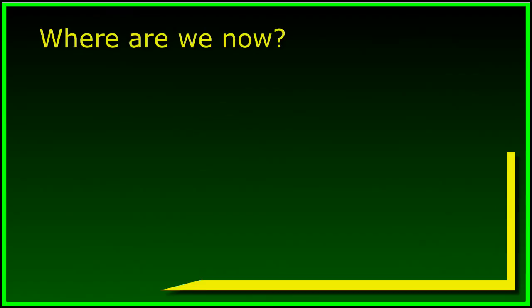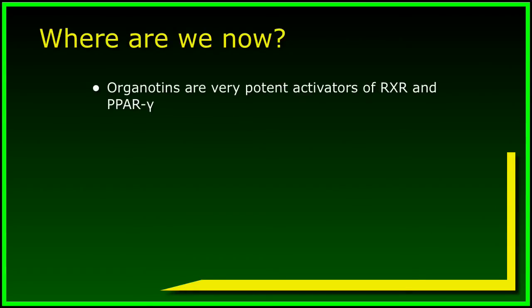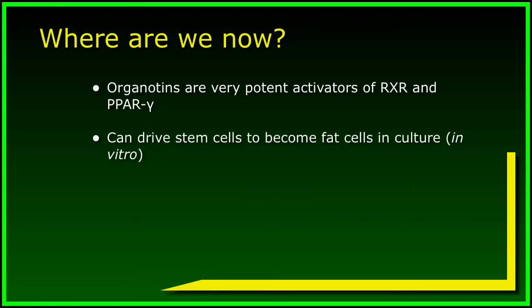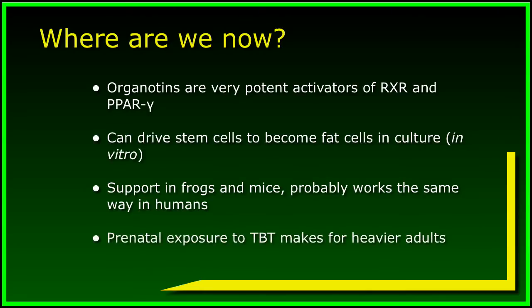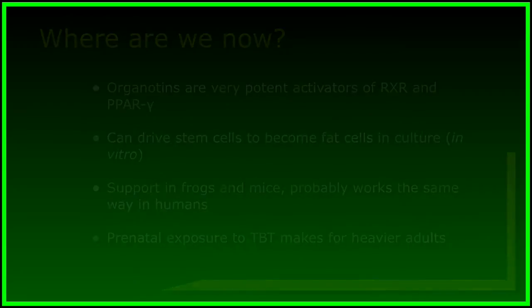Given this research, here are some conclusions we can draw. Organotins are potent activators of RXR and PPAR gamma and can drive stem cells to become fat cells in culture. We have tested this and found support in frogs and mice, and therefore have reason to believe it works similarly in humans, since humans have similar cellular processes. We even know that there are other ways that TBT can affect adipogenesis. It's clear that prenatal exposure permanently alters the adult phenotype, with the result that these animals have the predisposition to get fatter throughout their lives.